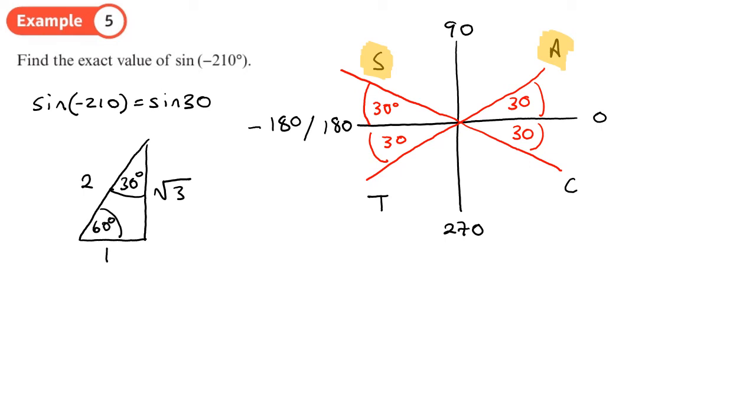So sine 30 is going to be the opposite over the hypotenuse, so it's actually exactly a half.